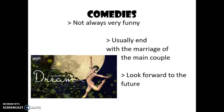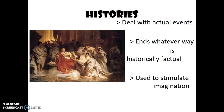Comedies are another type of genre that Shakespeare wrote. They are not always very funny, but they usually end with the marriage of the main couple and look forward to the future. A Midsummer Night's Dream is a classic example of a comedy written by Shakespeare. Histories are another genre — these usually deal with actual events and end in whatever way is historically factual, and they're used to stimulate the imagination. Shakespeare's words can get connected to the very event itself, such as Julius Caesar's death. Shakespeare wrote the play Julius Caesar, and his famous line 'Et tu, Brute?' has become kind of connected to the event itself, even though Shakespeare was writing about it much later. We don't know if Julius Caesar really said this.